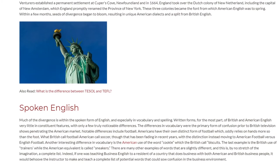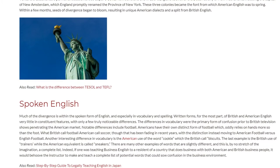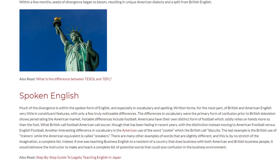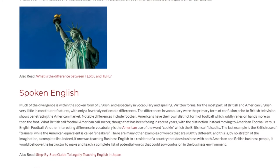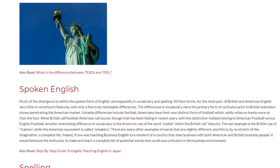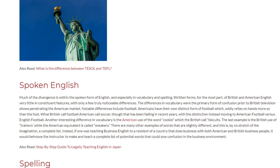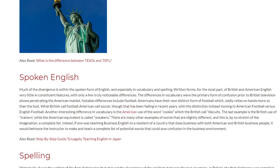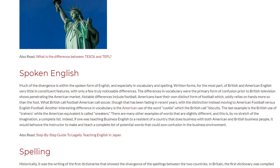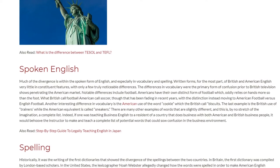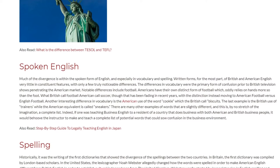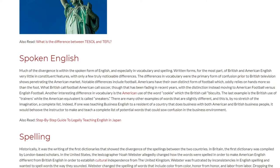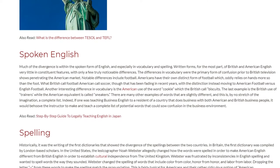Notable differences include football. Americans have their own distinct form of football which, oddly, relies on hands more so than the foot. What the British call football, Americans call soccer, though that has been fading in recent years, with the distinction instead moving to American football versus English football. Another interesting difference in vocabulary is the American use of the word cookie, which the British call biscuits. The last example is the British use of trainers, while the American equivalent is called sneakers. There are many other examples of words that are slightly different, and this is, by no stretch of the imagination, a complete list.